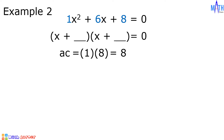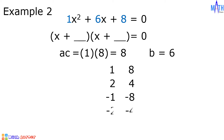Let us determine the factors of 8 that when added equal 6, the value of b. The factors of 8 are positive 1 and 8, positive 2 and 4, negative 1 and negative 8, and negative 2 and negative 4. The factors we need are 2 and 4, since 2 plus 4 is equal to 6. So we have x plus 2 times x plus 4 is equal to zero.